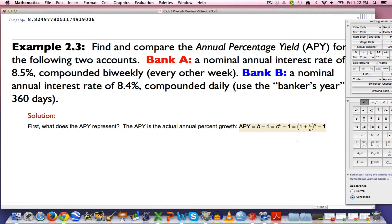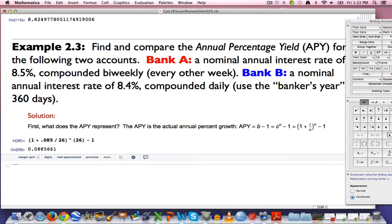To find the APY for bank A, I enter this into Mathematica. n is 26, the nominal percentage R is 0.085. So the APY here is going to be a little bit bigger than 0.085. Not much, but a little bit. There we go, 8.86% if you round it.